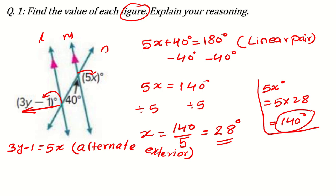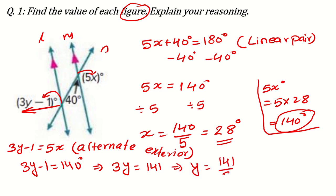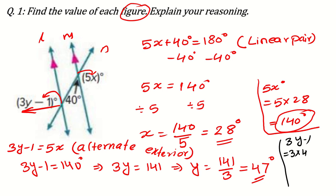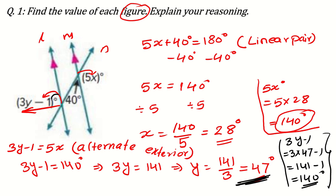The value of 5x was 140, so we put this value in: 3y minus 1 equals 140, which means 3y equals 141. Dividing by 3, y equals 141 divided by 3, which is 47 degrees. If they ask for the value of the angle 3y minus 1, then 3 times 47 minus 1 equals 141 minus 1 equals 140. Since they are alternate exterior angles, this angle is also 140 degrees.